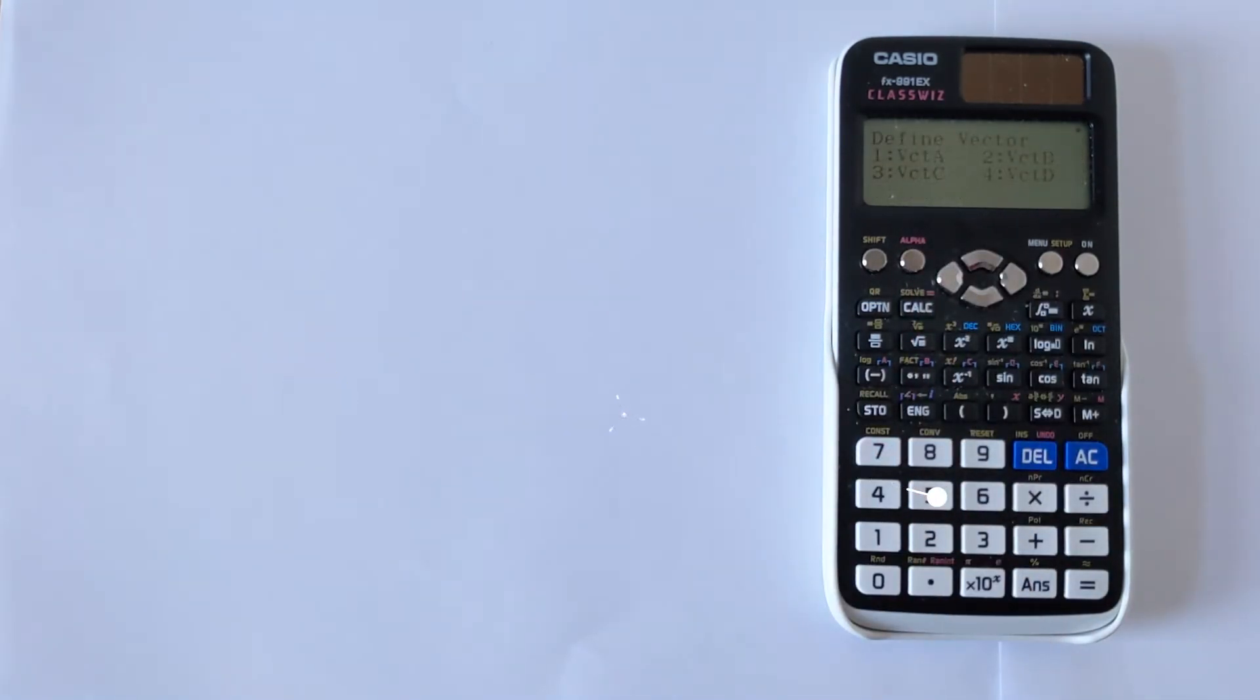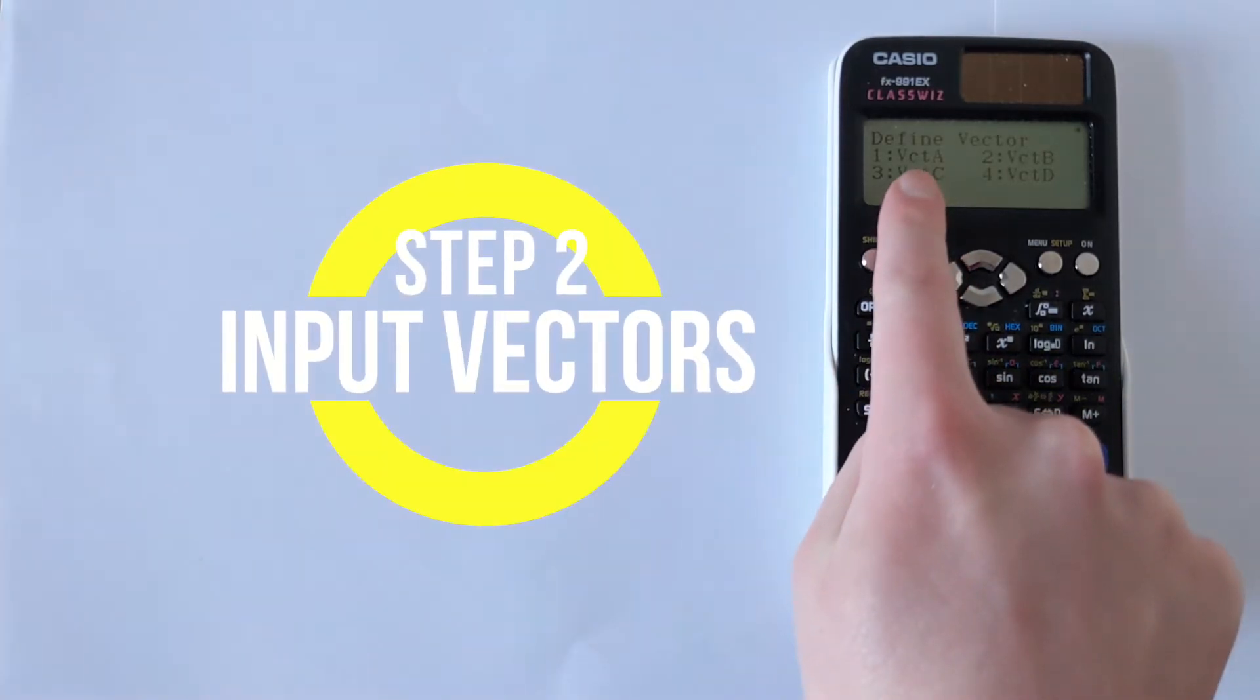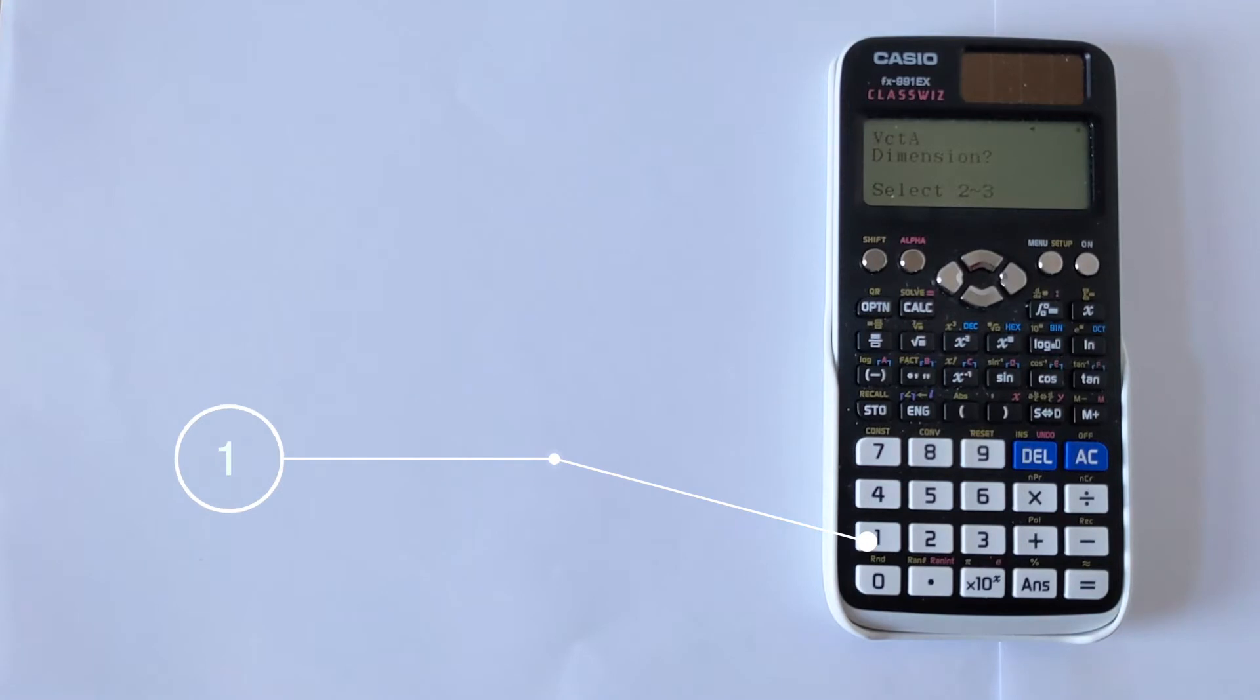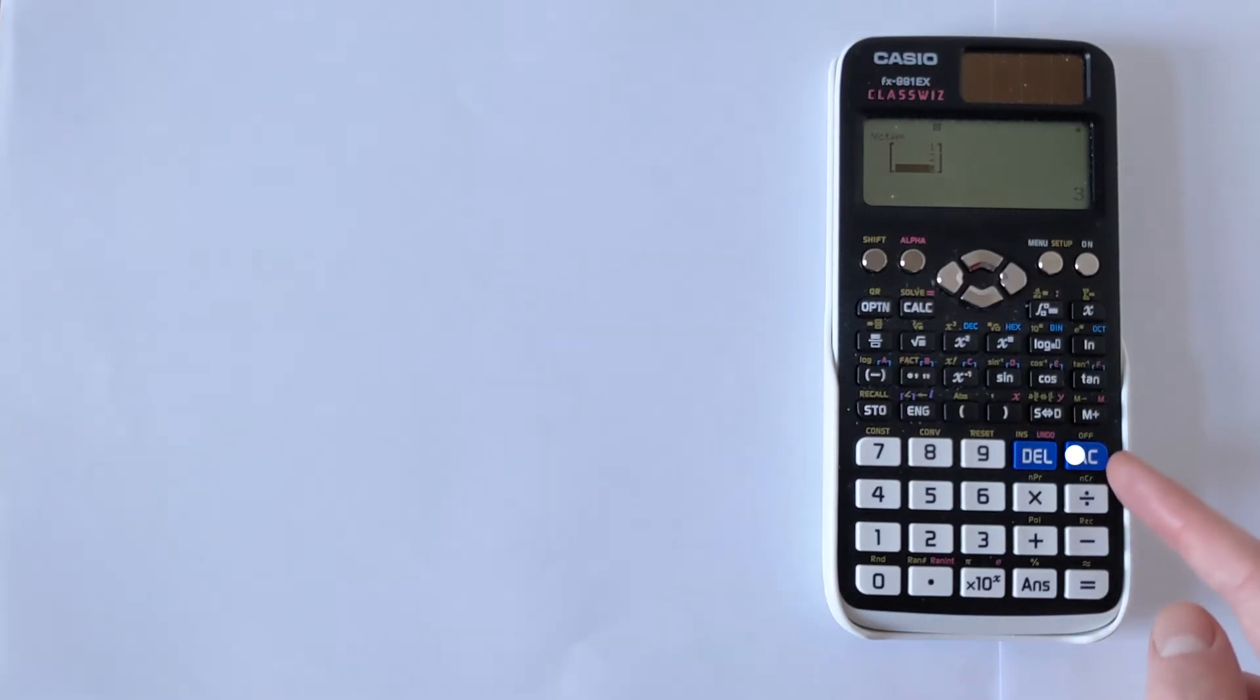We need to define vector A, then define vector B, and then find the angle between them. We want to input vector A, so we press 1 to bring up vector A. We need to select the dimension. You can see that these vectors are of dimension 3, so we press 3. Then you can input it by just 1 equals 2 equals 3 equals. Then you need to press the AC key once you've inputted the vector.